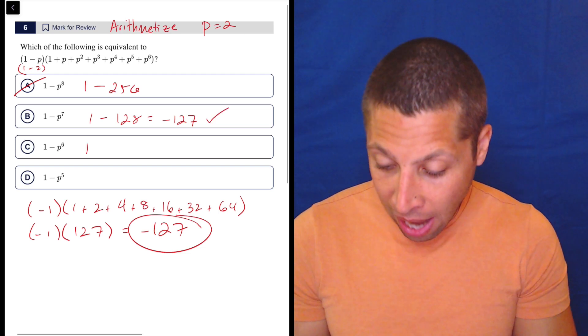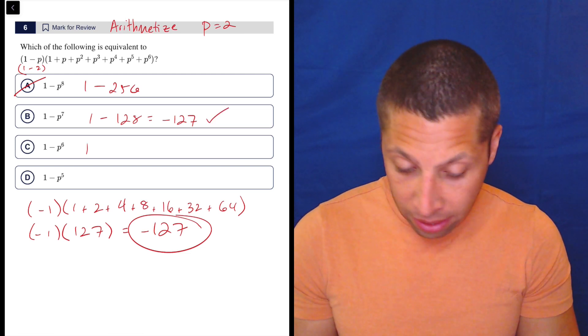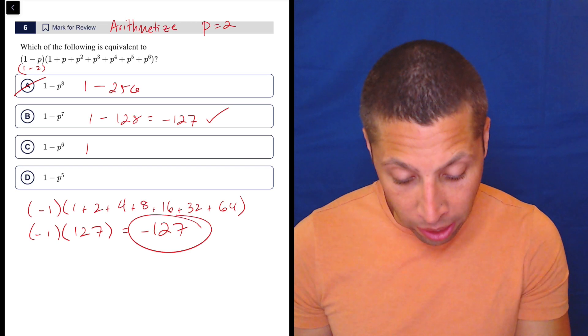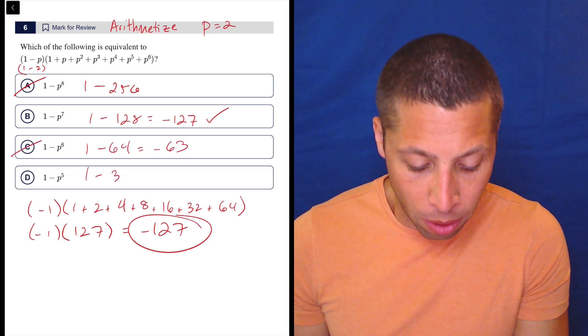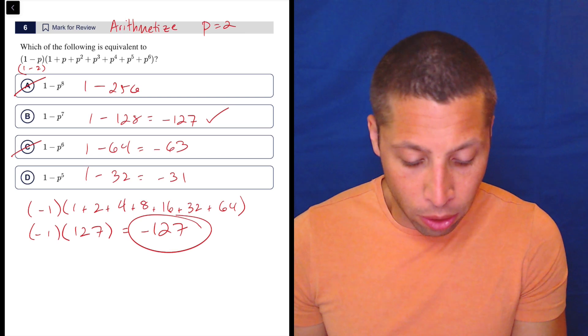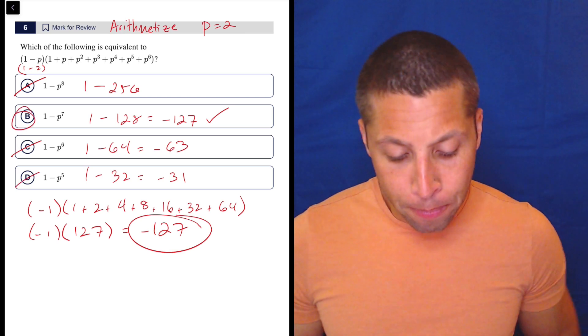Now let's double check everything else. I know it's not going to work, but two to the sixth, we already said, I believe, is sixty-four. So yes, that's one minus sixty-four. That's negative sixty-three. This would be one minus thirty-two. That's negative thirty-one. So there you go. It's B, no doubt.